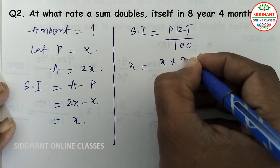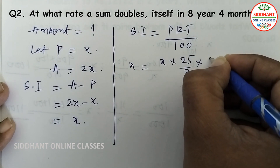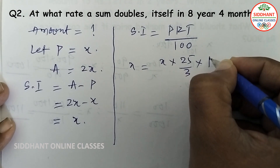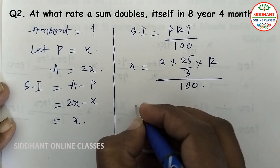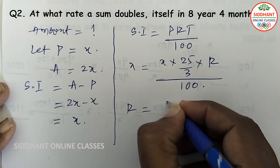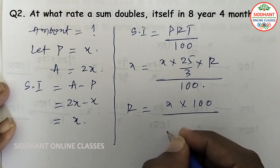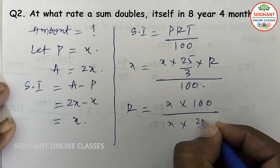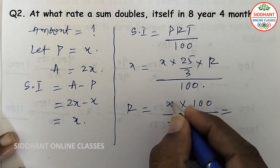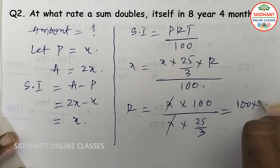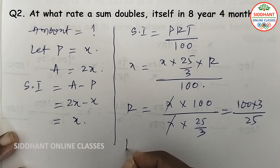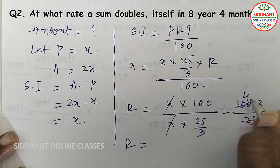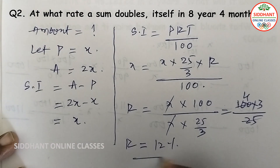Converting 8 years 4 months into a fraction: 8 and 1/3 years equals 25/3. So rate equals X × 100 ÷ (X × 25/3). Here X cancels, giving 100 × 3 ÷ 25, so rate equals 12%. The sum will be doubled at 12% rate of interest.